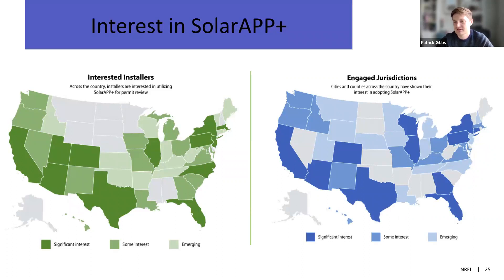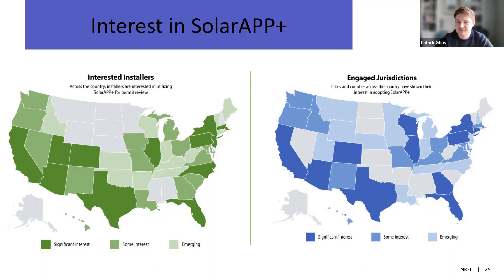There has been an abundance of interest in SolarAPP Plus. Currently, we have 12 jurisdictions that are fully adopted, including Pleasant Hill, San Ramon, Menifee, Simi Valley, Stockton, Sonoma County, and Benicia in California, and Tucson and Pima County in Arizona. We also have quite a few jurisdictions running pilots, including Modesto, Richmond, Beaumont, and many more. We also have many jurisdictions working through the onboarding process and in discussions about launching a pilot.